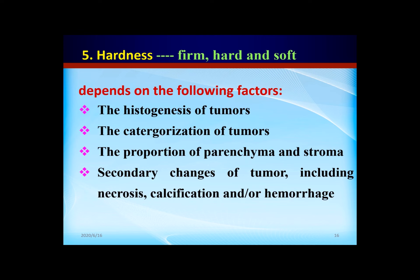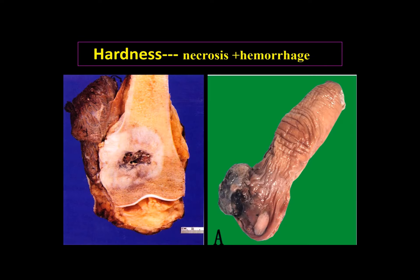Secondary changes of tumor, including necrosis, calcification, or hemorrhage, also affect hardness. This is osteosarcoma — a highly malignant tumor that can form bone tissue, so the hardness is hard.